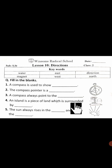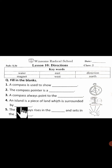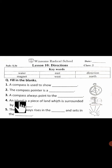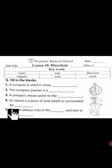...surrounded by water. Island is called jazirah. An island is a piece of land which is surrounded by water. You will see in the picture that the dry place is surrounded by water.